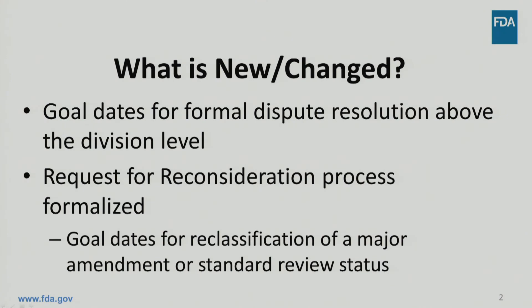Now let's look at what is new or has changed from GDUFA-1 for both FDA and industry. In GDUFA-2, a goal date will be applied to formal dispute resolutions above the division level. FDA will respond within 30 calendar days of receipt of the written appeal pursuant to the applicable fiscal year goal. Prior to pursuing a formal dispute, the applicant must try to resolve the issue through the request for reconsideration process. GDUFA-2 formalized FDA's current and historical practices regarding these requests with the issuance of a new draft guidance specific to request for reconsideration.